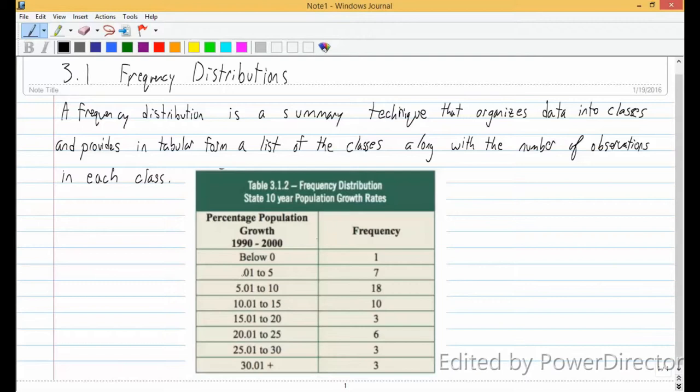These things listed here, all of those are classes. And so a frequency distribution table will take the number that's in that class and list it. So what this means, this number right here, seven.